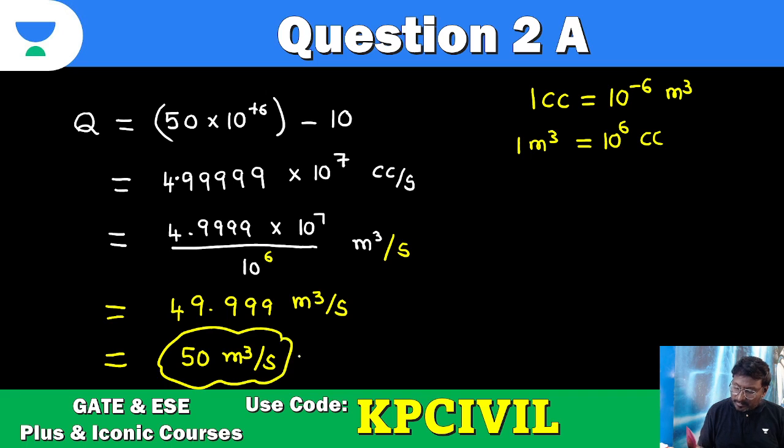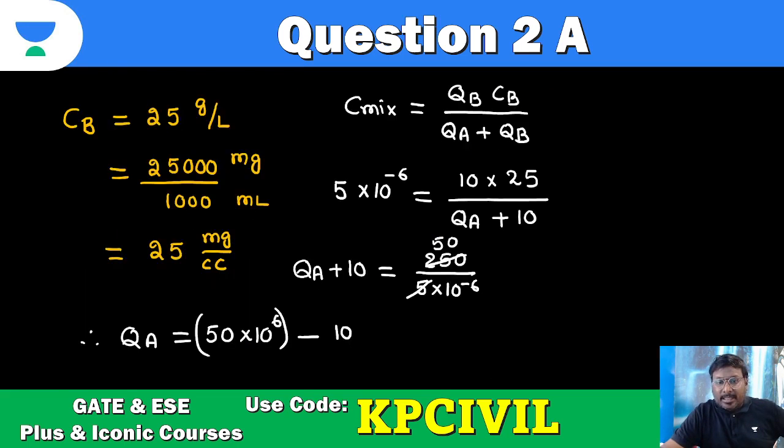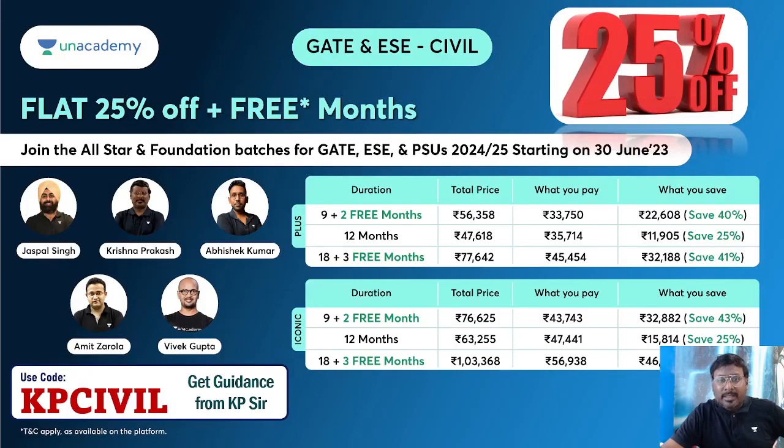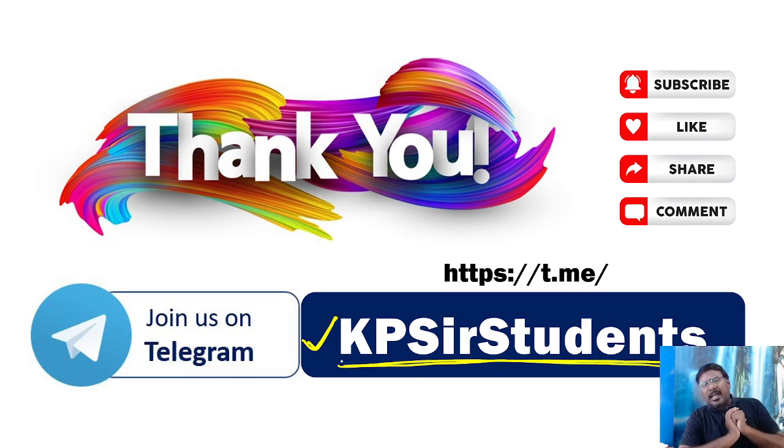So only if you know unit conversion, the question is done. Such an easy question, 10 marks. But you need to show how you have done unit conversion perfectly. So everything first we converted to cc, centimeter cube, then we are converting to meter cube per second. That must be shown compulsory, how you are converting, that is important. Now Unacademy has 25% off going on.